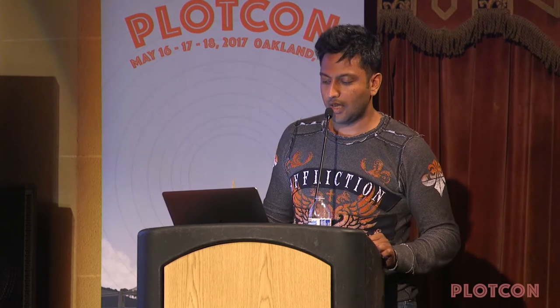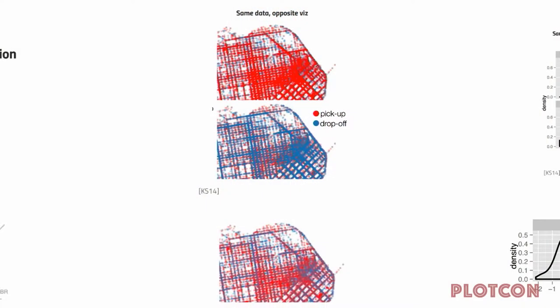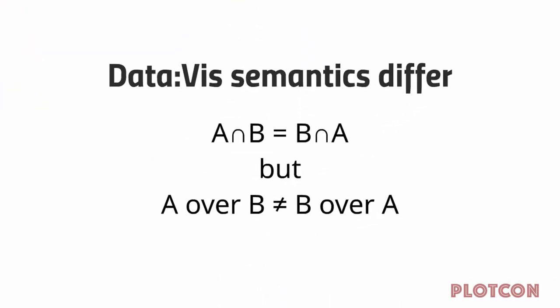What did we do to fix the bottom visualization? This is proper sampling technique. Instead of being at the whims of the rendering order of the computer or the input order of the dataset, we actually sample and find out what the density of pickups and drop-offs is in each location.